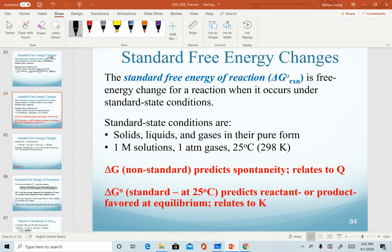Key things to remember as we calculate free energy values: Delta G without the NOT symbol is the non-standard value. This is the value that predicts spontaneity, and it's similar in concept to our calculation of Q. We use Q to determine whether a reaction is going forward to reach equilibrium or in the reverse direction. Delta G non-standard is telling us the direction a reaction is going.